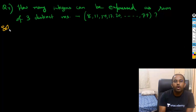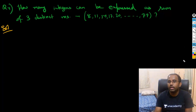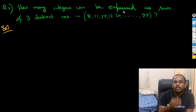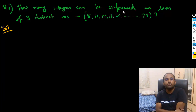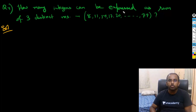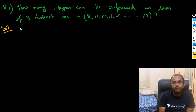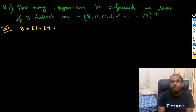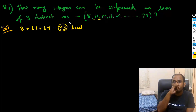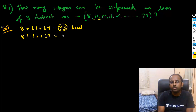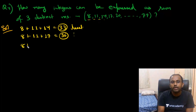Basically, this is a counting question. People tend to leave such questions, but it's a very simple question. For example, 8 plus 11 plus 14 equals 33 — that's the least number I can get, using the first three numbers. If I want to increase that number, I go to 8 plus 11 plus 17, which equals 36. The next number would be 8 plus 11 plus 20, which equals 39.